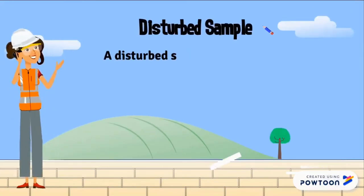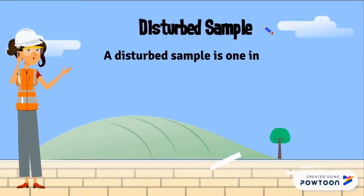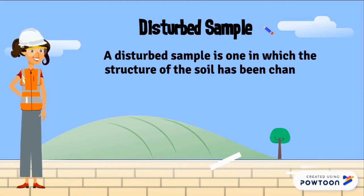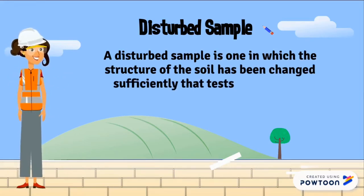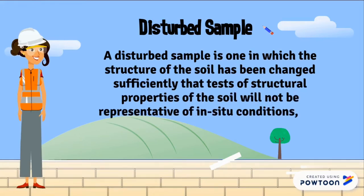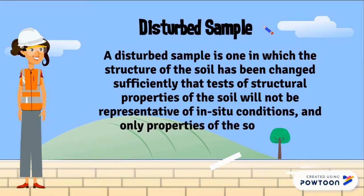A disturbed sample is one in which the structure of the soil has been changed sufficiently that tests of the structural properties of the soil will not be representative of in-situ conditions, and only properties of the soil grains can be determined.